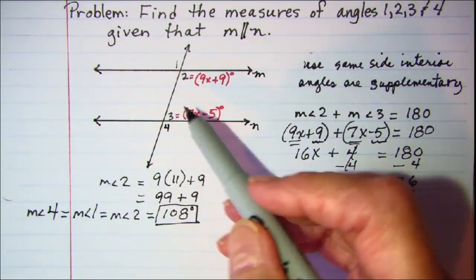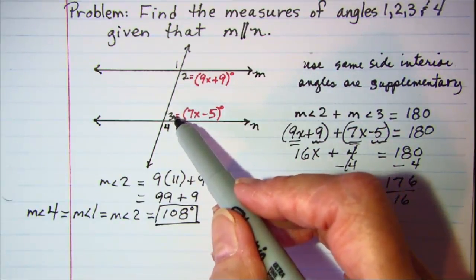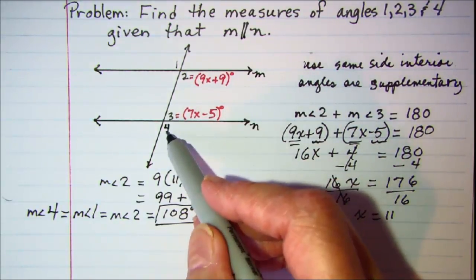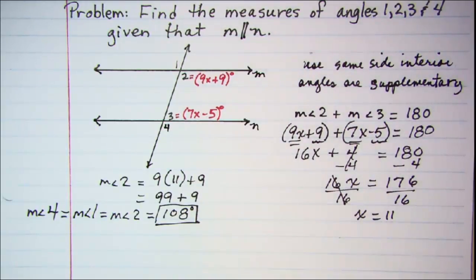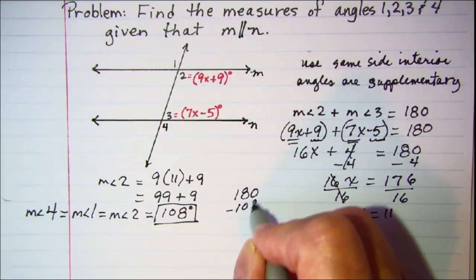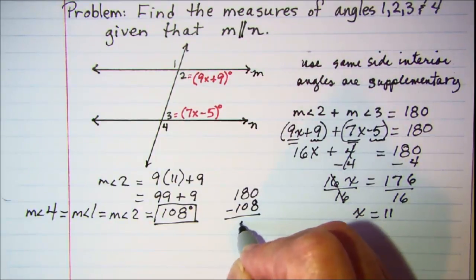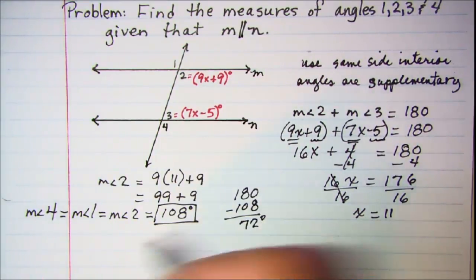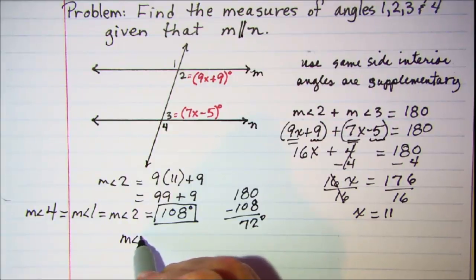And the only angle left to find is angle 3. We know that angle 3 and angle 4 form a linear pair. 180 minus 108 is 72 degrees. So the measure of angle 3 is equal to 72 degrees.